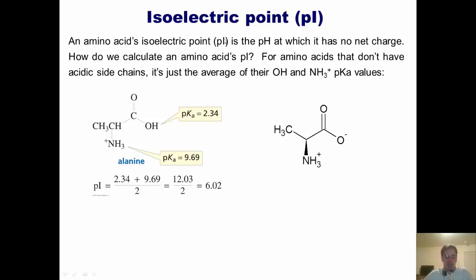That's it. So I just take 2.34 plus 9.69, get a number, 12.03, and divide it by 2. That number, 6.02, is alanine's isoelectric point pI.